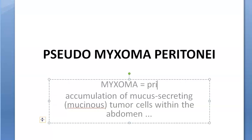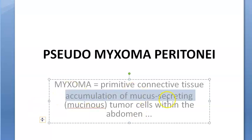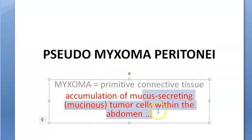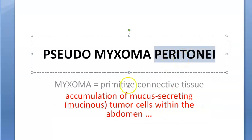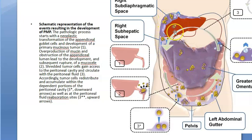Myxoma actually refers to primitive connective tissue, but here what we are referring to is accumulation of mucus-secreting tumor cells within the abdomen — within the peritoneum. That is pseudomyxoma peritonei. Here you can see how the peritoneum or the abdomen is full of these yellow colored mucus-secreting cells — mucinous tumor.